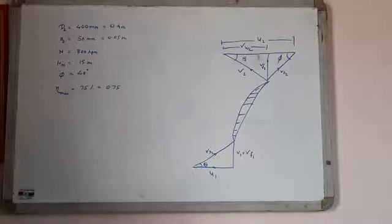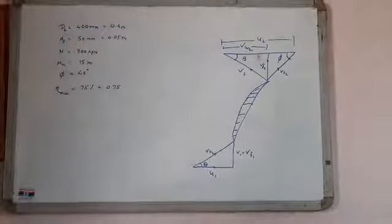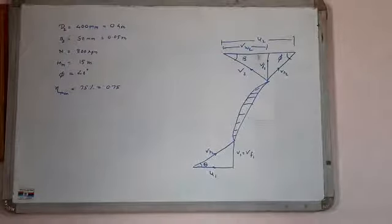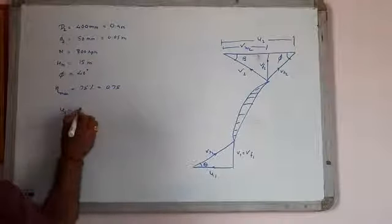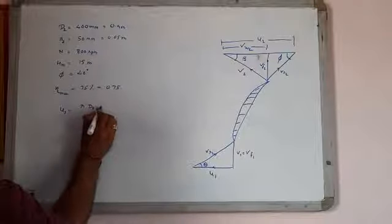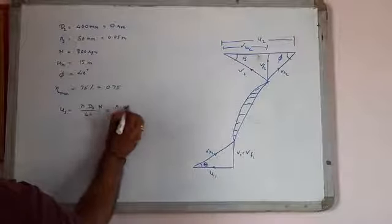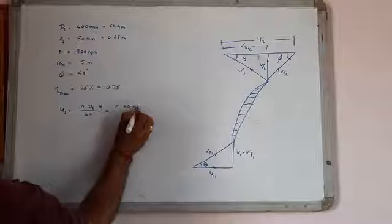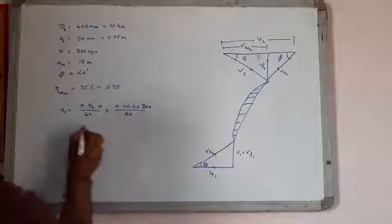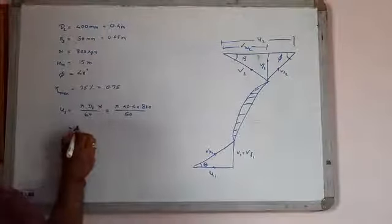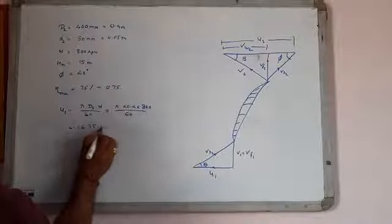Tangential velocity of impeller at outlet U2 equal to pi Dn by 60. That is U2 equal to pi D2n by 60. Putting the values here, pi into 0.4 into 800 by 60. So the value of U2 comes 16.75 meter per second.